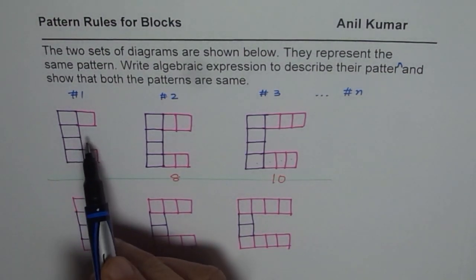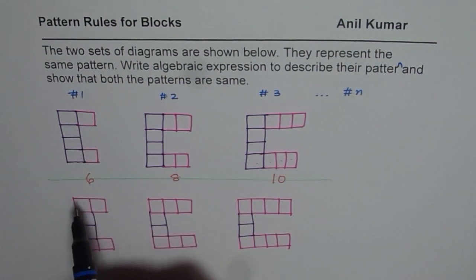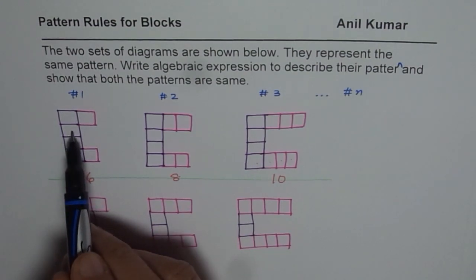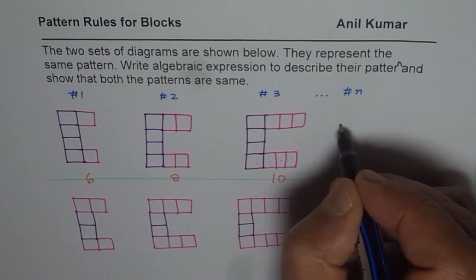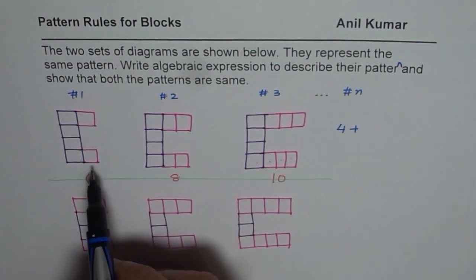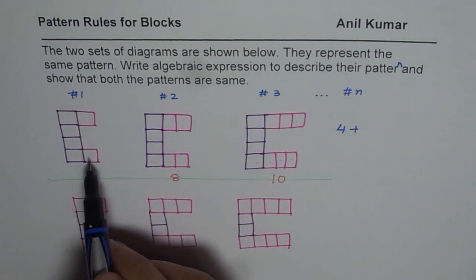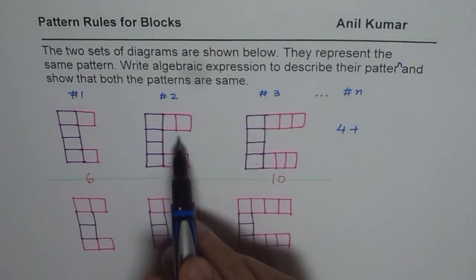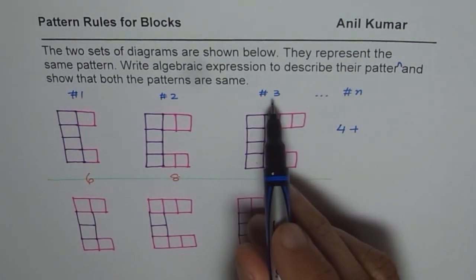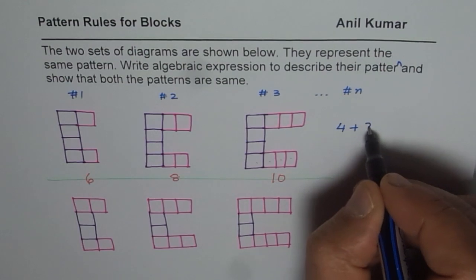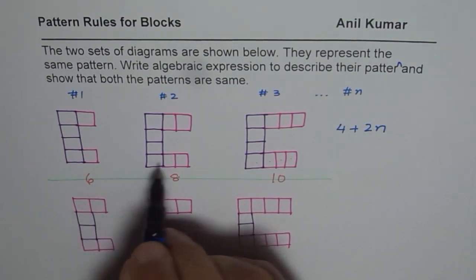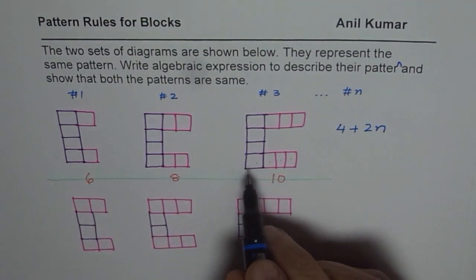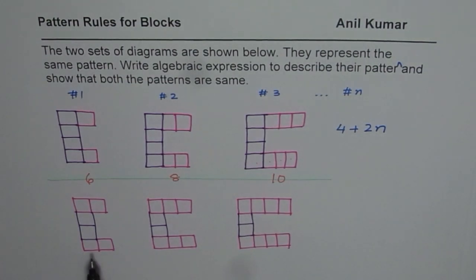Now in figure number 1, what do you notice? You notice that there are 4 fixed blocks. So we can say the expression has 4 as the fixed part. What is changing is: in figure number 1 we have 2, in figure 2 we have 4, in figure 3 we have 6 — that means 2 times the figure number. So we can write this as 4 plus 2n, and that represents the total number of blocks in any given figure.